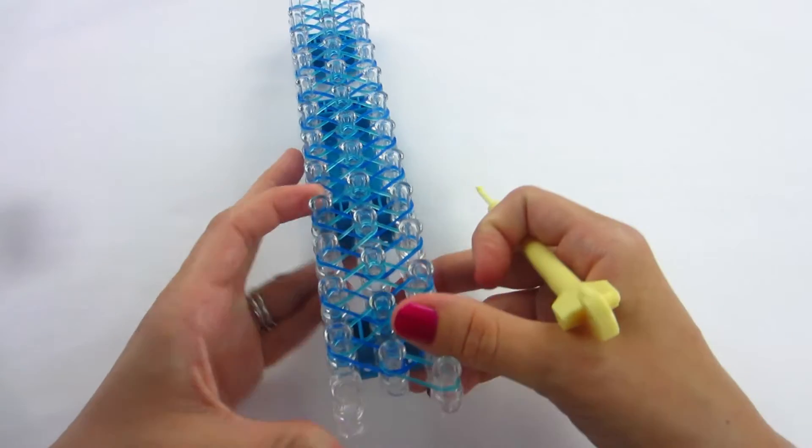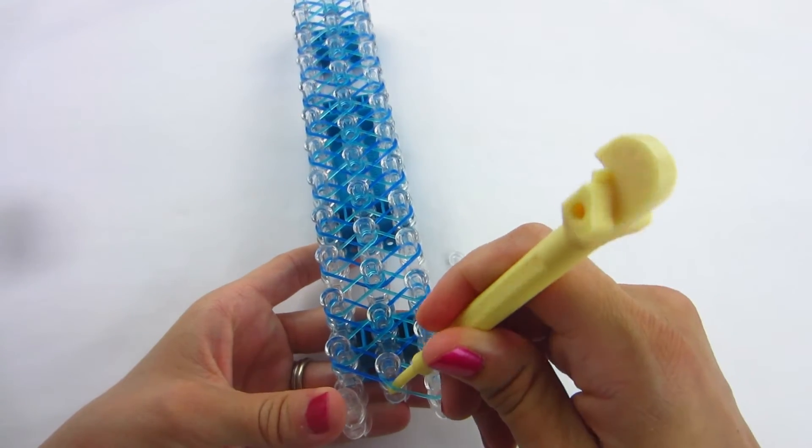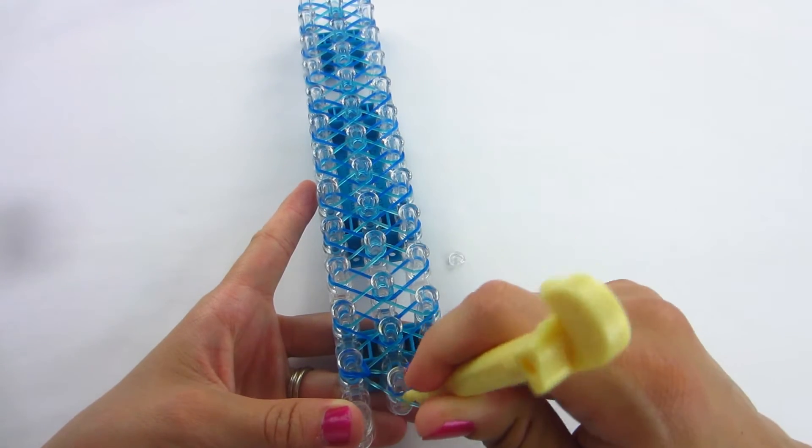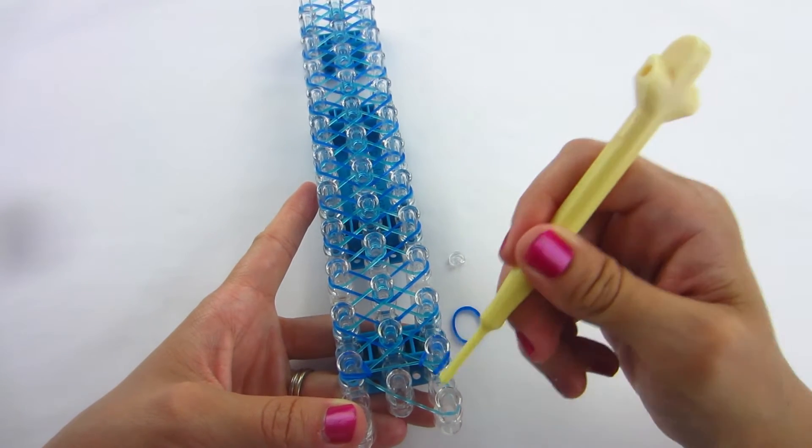We will start in the bottom middle peg here. You want to go down inside your aqua band and pick up that first top blue band and loop it up and over to the left, and then go back in and get the other one to loop up and over to the right.